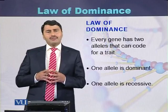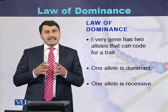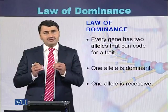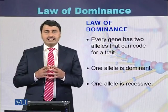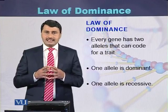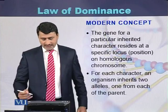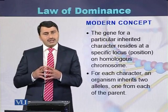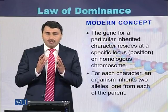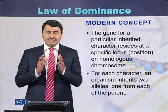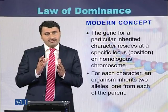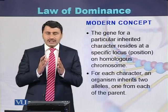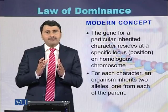In the current scenario, the law of dominance states that every gene has two alleles — one allele comes from the father and one allele comes from the mother. One of the alleles is dominant while the second allele is recessive. The modern concept is that these genes are present on chromosomes, which exist in the form of homologues. One chromosome is transferred from the father and one from the mother, and each chromosome has a particular locus for a particular trait.